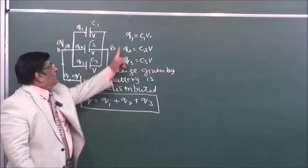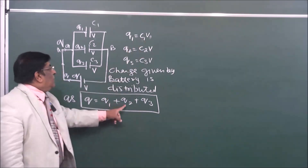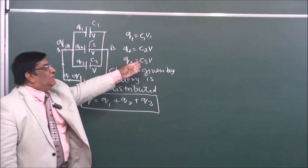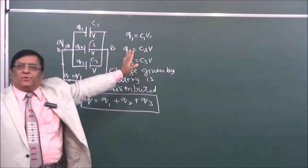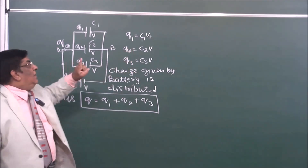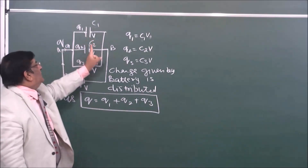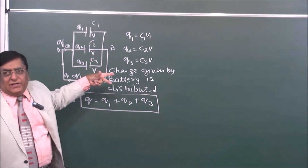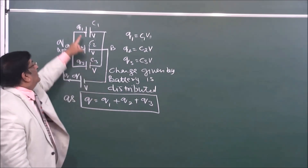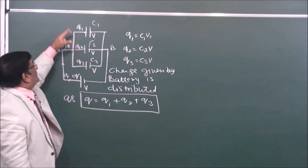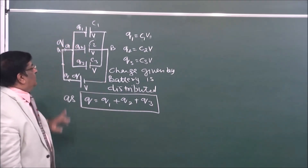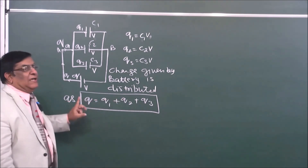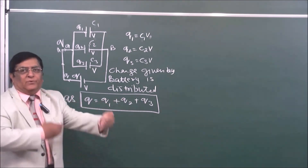Q1 is equal to C1V, Q2 is equal to C2V, and Q3 is equal to C3V. If we know the values of C1, C2, C3 and the value of V, then we can calculate how much charge is distributed in each, and the total charge taken out will be equal to Q.